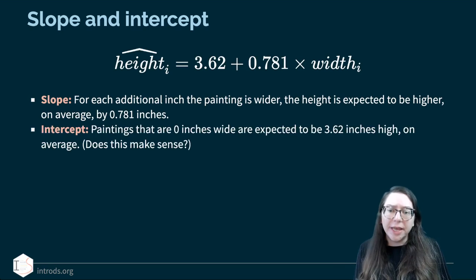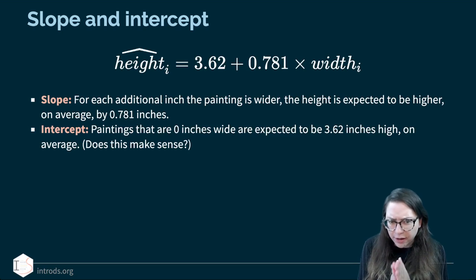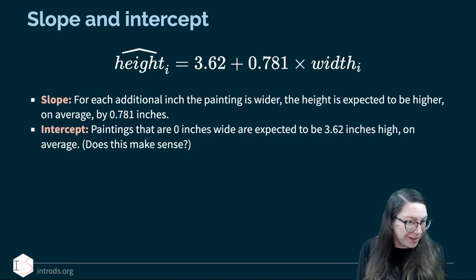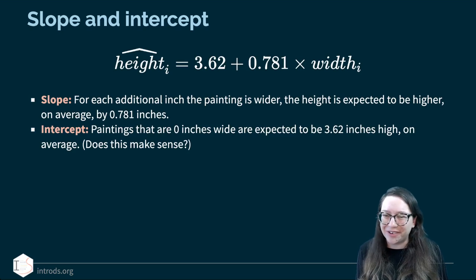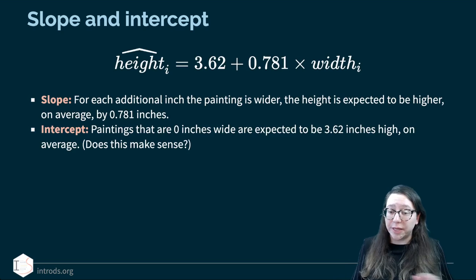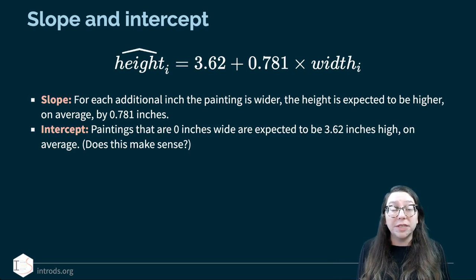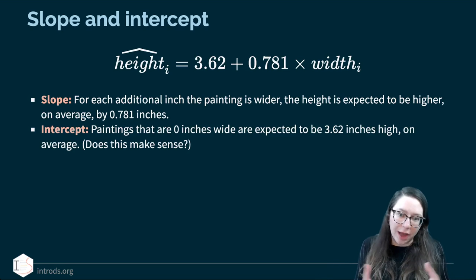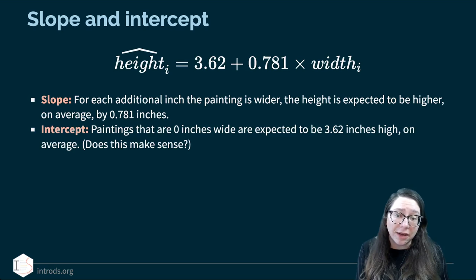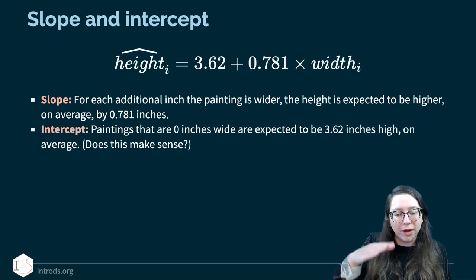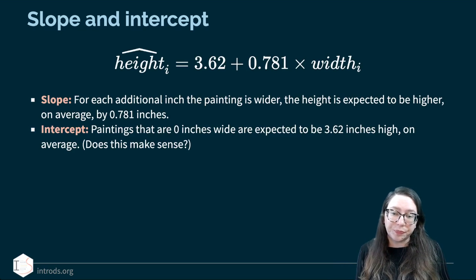The intercept corresponds to where width is equal to zero. Paintings that are 0 inches wide are expected to be 3.62 inches high on average. Does that make sense? Probably not — we probably have no paintings 0 inches wide in our dataset. But mathematically this line extends to infinity on either end. As we discussed in the previous video about extrapolation, interpreting the intercept in this context doesn't make practical sense, but mathematically that number is there to adjust the height of this line.